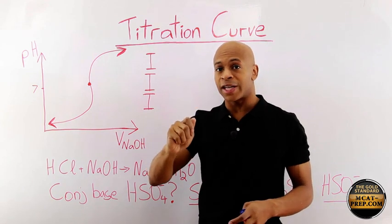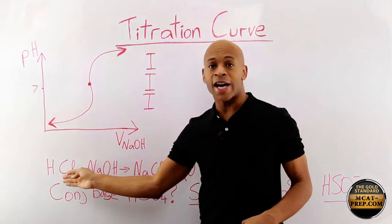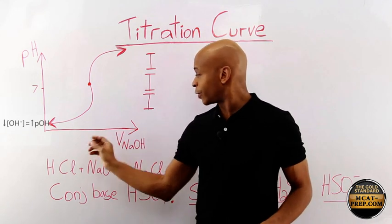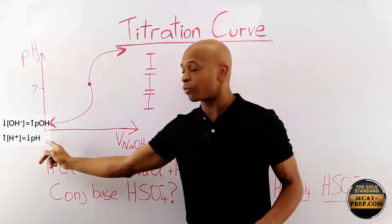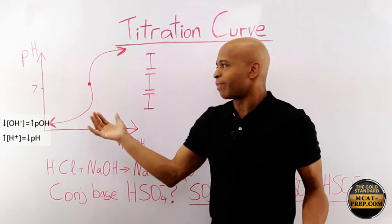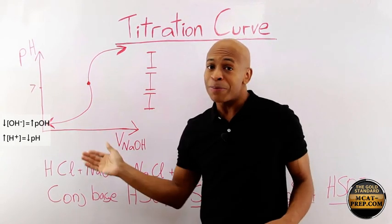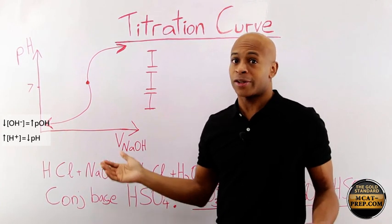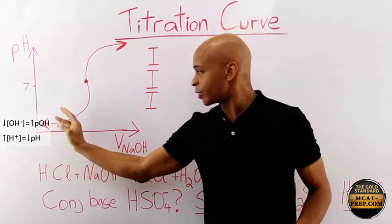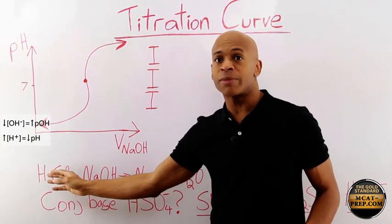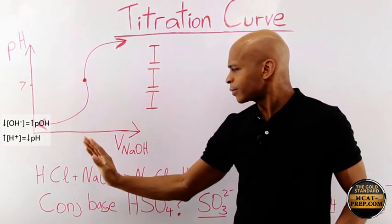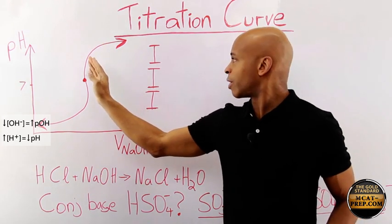Now let's look at a reaction with a strong acid — hydrochloric acid — and a strong base, sodium hydroxide. When you have a very low concentration of sodium hydroxide, you expect an extremely low pH. The general shape of the curve is sigmoidal — S-shaped. It starts at a very low pH because you have HCl and high hydrogen ion concentration, since pH is the negative log of hydrogen ion concentration.